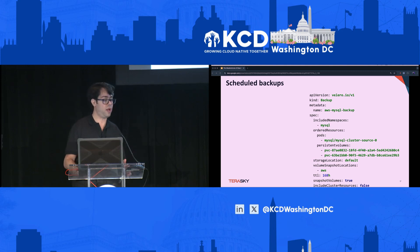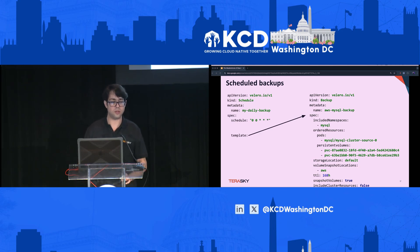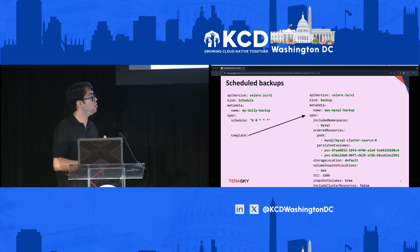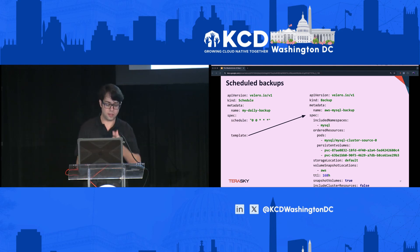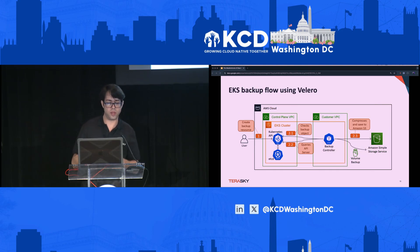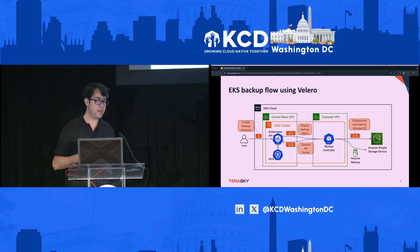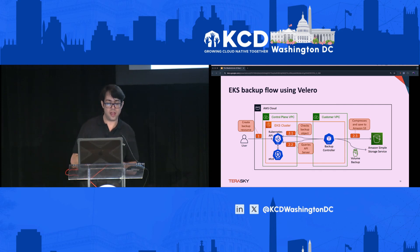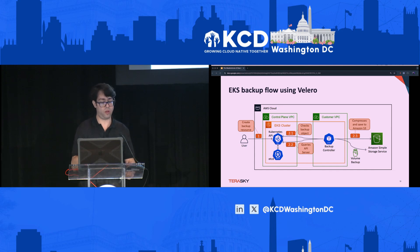To make it run on a schedule, you set up another CRD called Schedule and configure the cron job — in this example, it runs every day. Behind the scenes: the control plane installs the CRD and Helm charts, then performs backup operations. On the customer VPC side, it installs the backup controller, runs the operation on the specific cluster, and when complete, sends the backup to an S3 bucket. The same process happens on the destination cluster when an incident occurs.